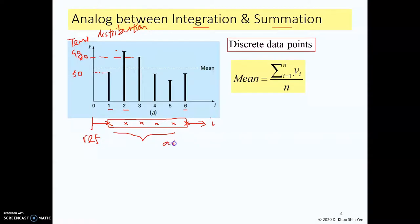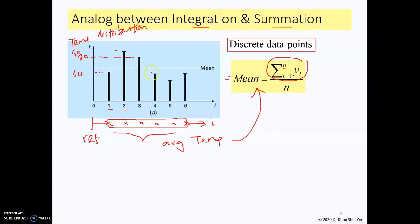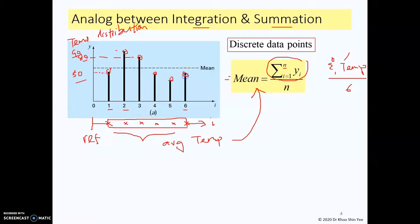To find the average temperature along this plate, you can use the mean formula. The average temperature equals the summation of all y values from point one to the total number of points n — in this case six. You take the summation of all temperatures: 50 plus 90 plus 80, and so on, assuming we obtain 350. Then divide 350 by six to obtain 58 degrees Celsius, which is the mean or average temperature.